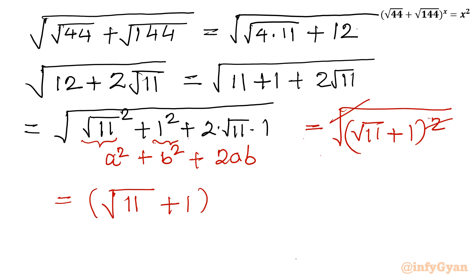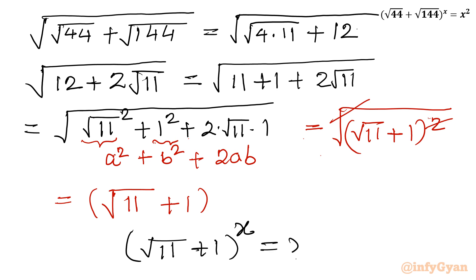Now let us write our exponential equation once again. It becomes: (√11 + 1)^x = x.